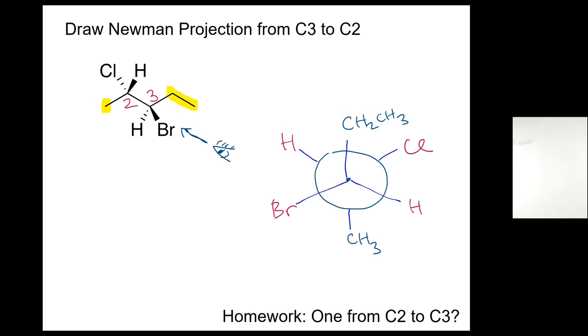My homework for you all to do the Newman projections from the C2 to C3. That means you have to look at from that angle and have to draw, and it's going to be opposite way of seeing it, so it will change. So you're going to do it in multiple different angles so people can get used to it.